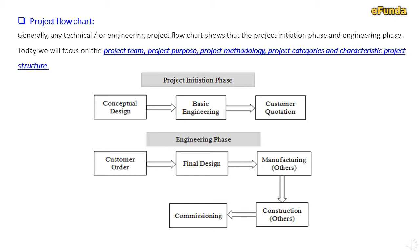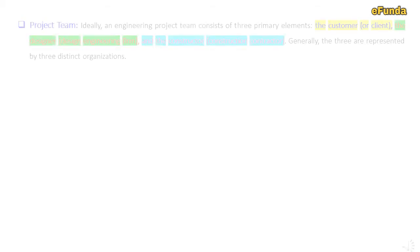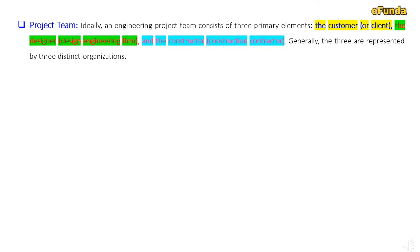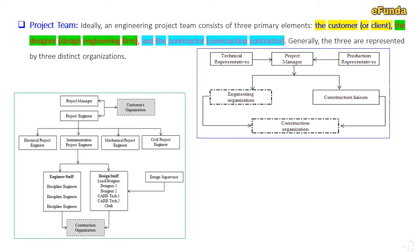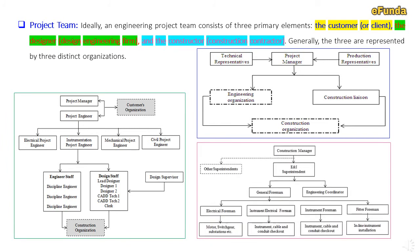Moving on to our next topic — the project team. Ideally, an engineering project team consists of three primary elements: the customer or client, the designer or design engineering firm, and the constructor, that is the construction contractor. One can see all three terms in the figure, indicated in respective colors — the customer in a blue box, the designer in a green box, and the constructor or construction contractor in pink.